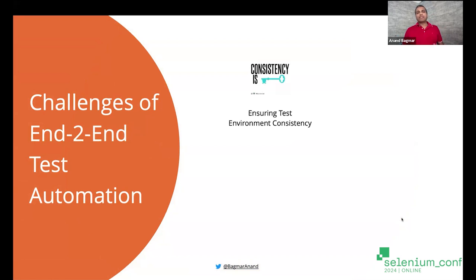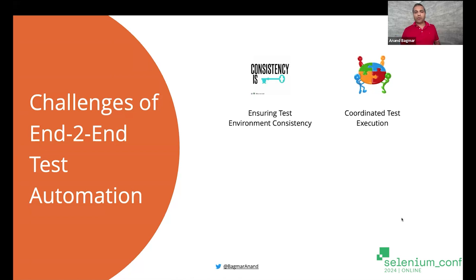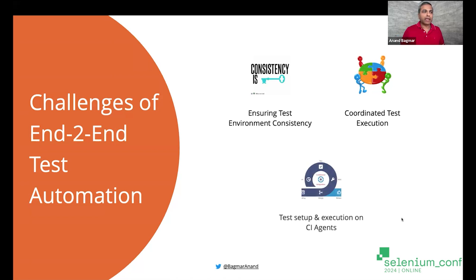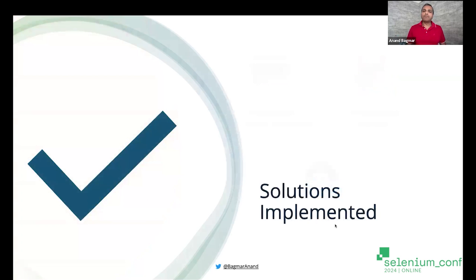Based on the ground reality, you can sum up the challenges as: ensuring test environment consistency depending on where the test is running and against which environment; coordinating test execution — developers should be able to run it, testers should be able to run it, they should be able to run a subset of tests or the full suite — all in a seamless fashion. And then, the test execution environment setup and execution in CI agents, how to make that seamless because without a seamless solution it becomes a very manually driven effort.